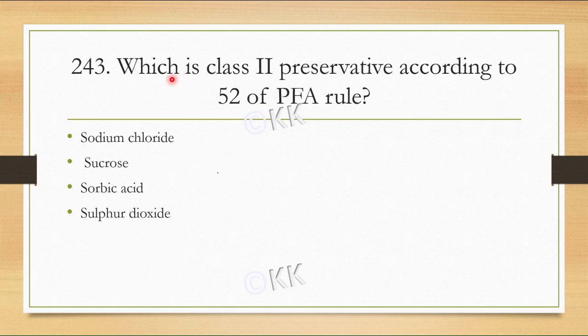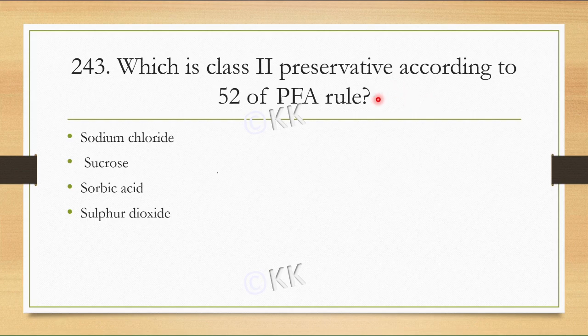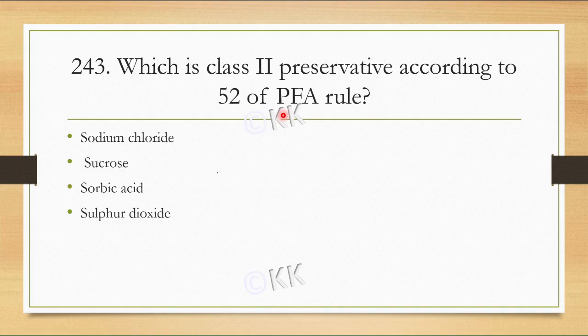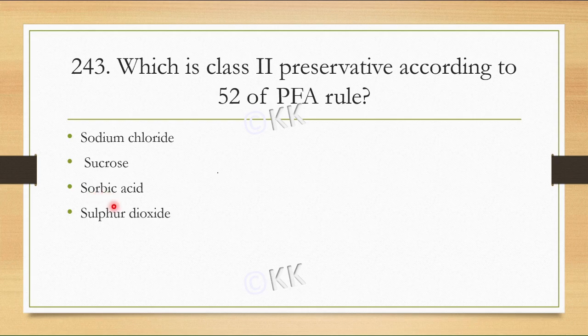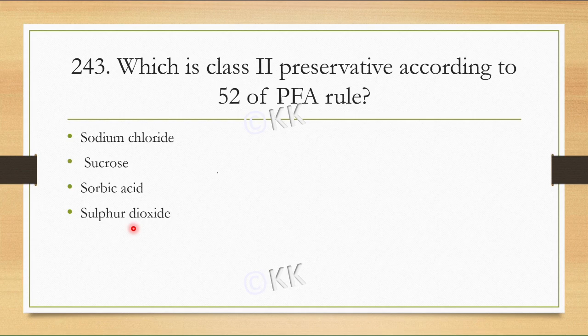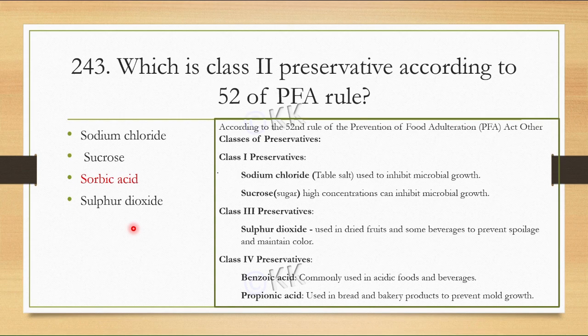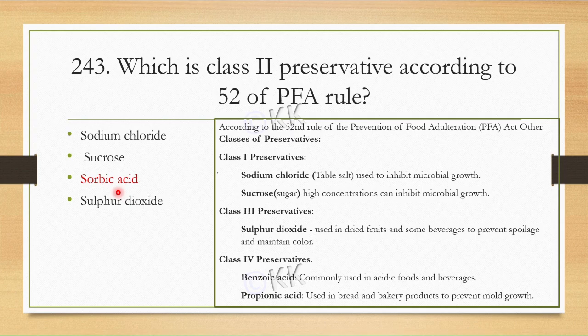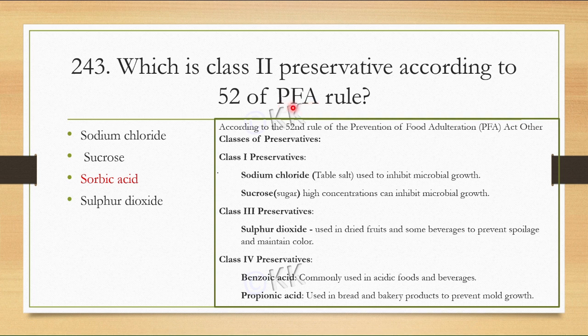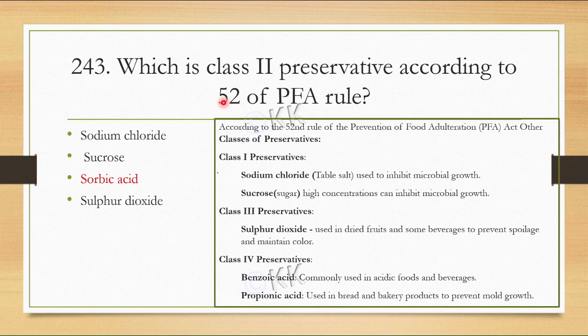Next question: Which is a class 2 preservative according to rule 52 of PFA? Option A is sodium chloride, option B is sucrose, option C is sorbic acid, option D is sulfur dioxide. The correct option is C, sorbic acid. Sorbic acid is a class 2 preservative under the Prevention of Food Adulteration Act rule 52.